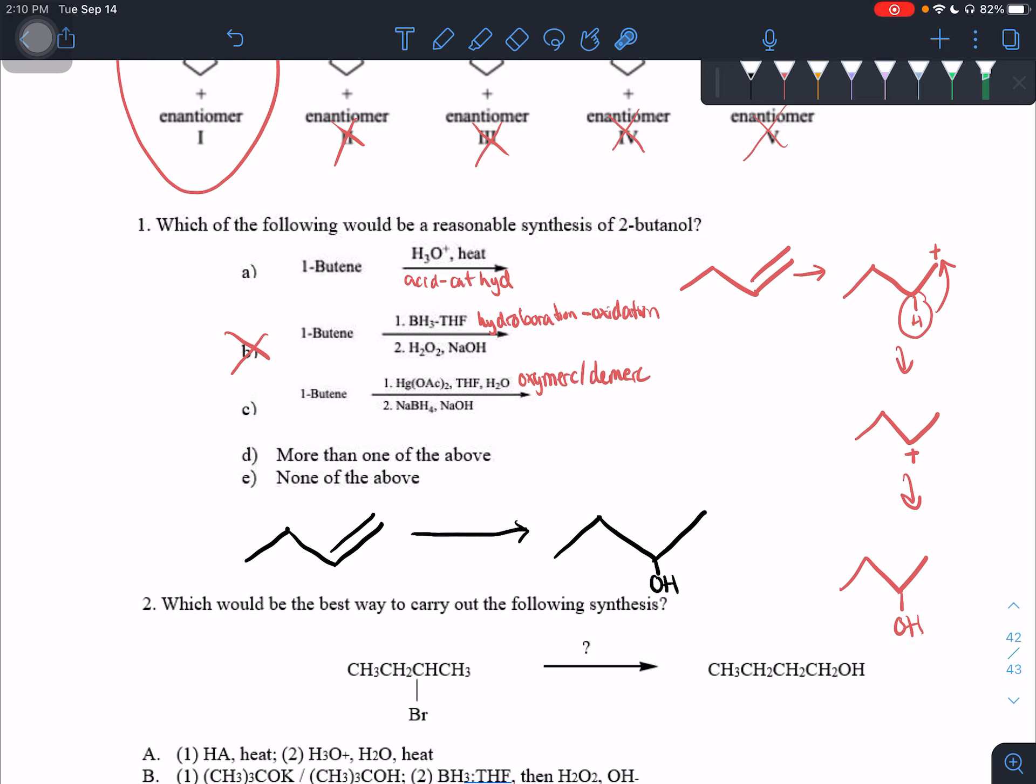So regardless, we still end up Markovnikov. And then for the oxymerc, dmerc, we know that it's going to be added Markovnikov. So it's going to go onto the more substitute side over here. So the correct answer for this one is more than one of the above. I do want to say something about this. So it's asking for a reasonable synthesis. It's not asking for the best synthesis. So just be careful with the wording. But A and C are both reasonable synthesis of two butanol from one butene.